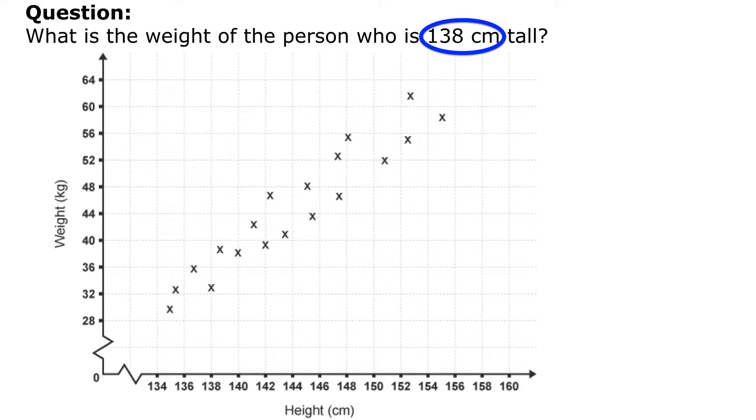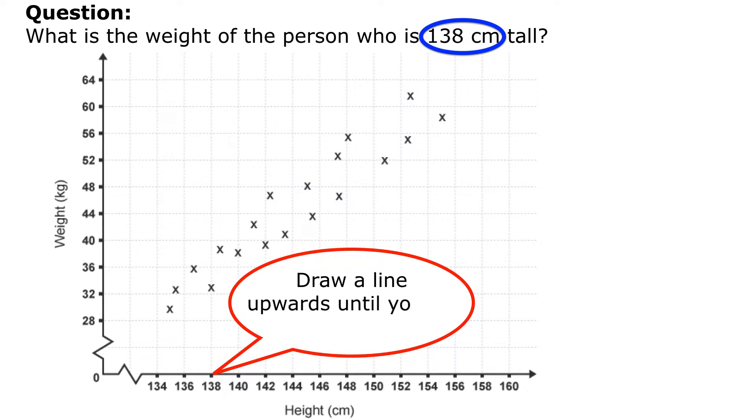So what we want to do is we want to locate that 138 centimeters because that's the information we've been given. So I'm going to find the height on my horizontal axis here, then I'm going to draw a line upwards until I hit the data point itself. And there's that blue line I've just drawn.